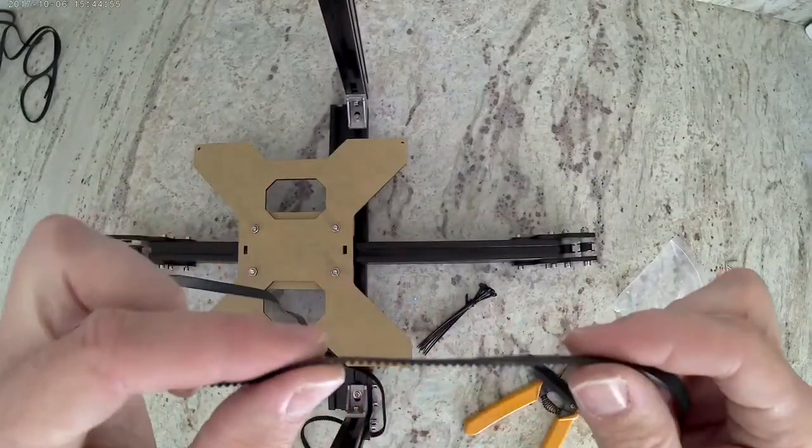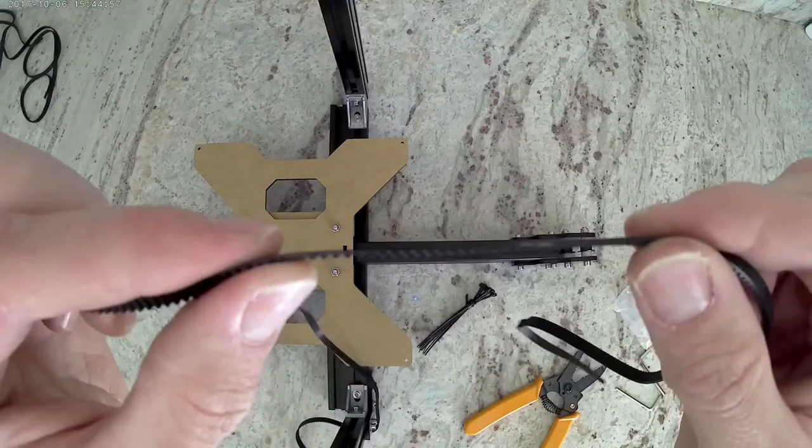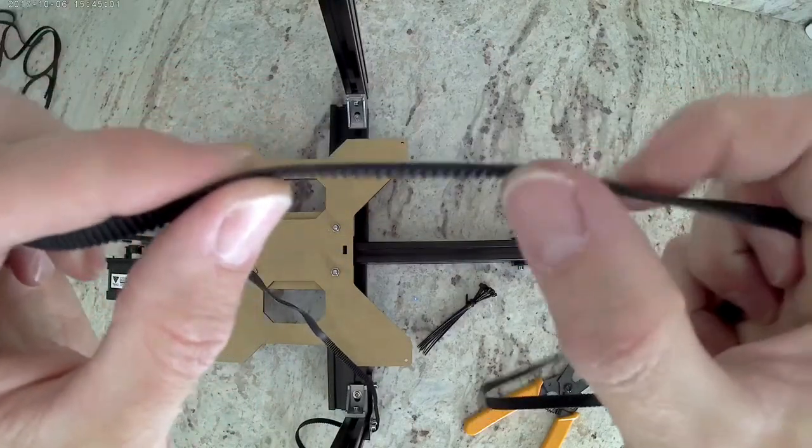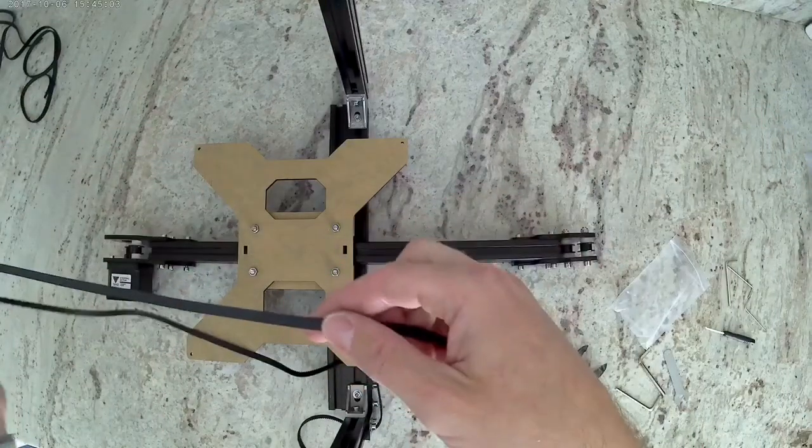You'll notice the belt has teeth on one side and flat on the other side. The teeth are going to wrap around the gear on the motor, then go through the center of the extrusion.